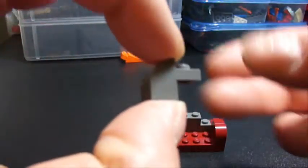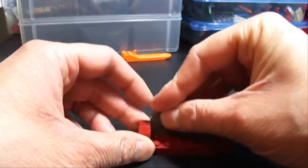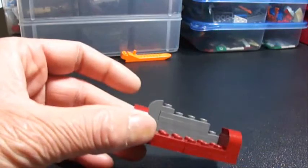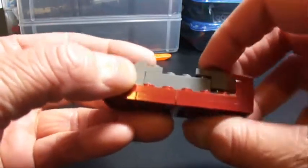Then we're going to take our small bows and put those on, one on each side. So it should look like that.